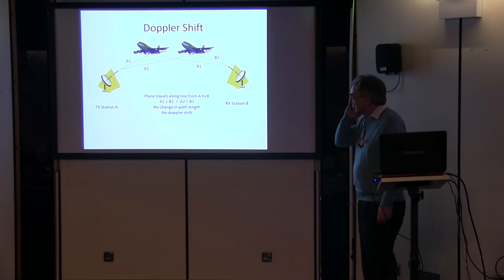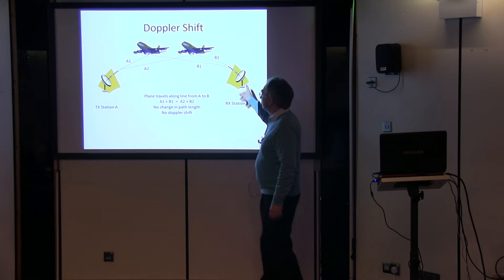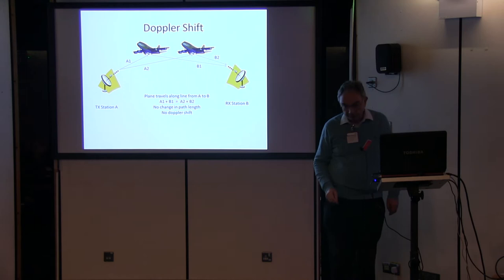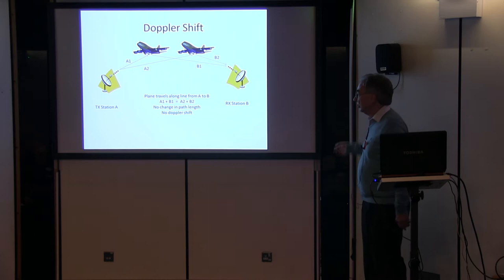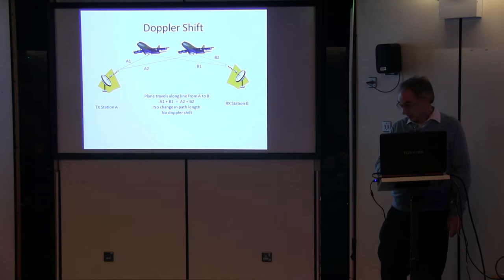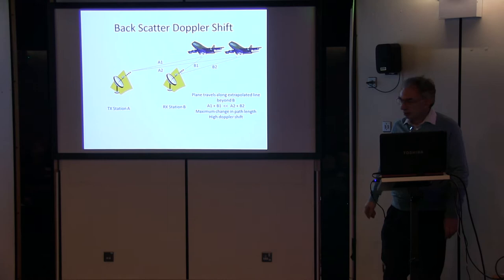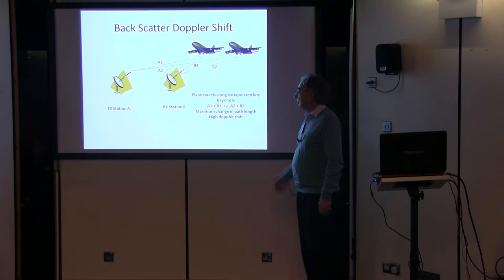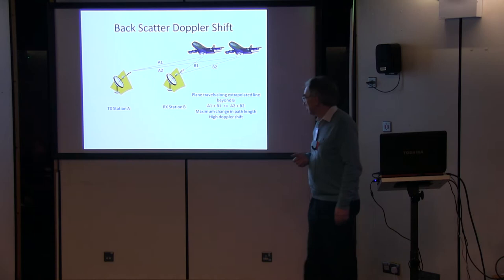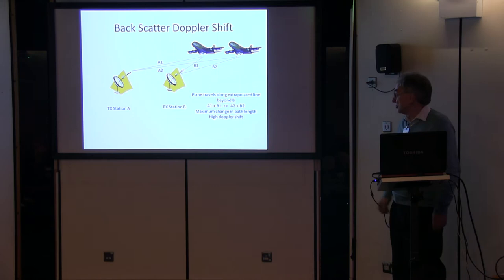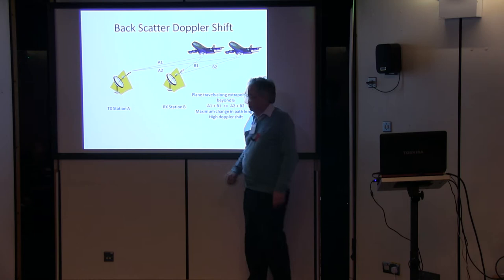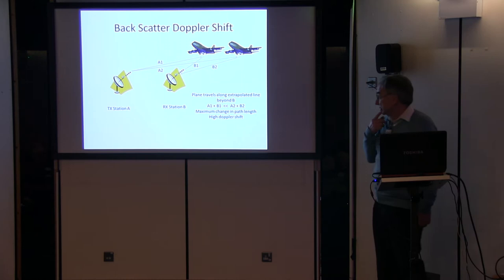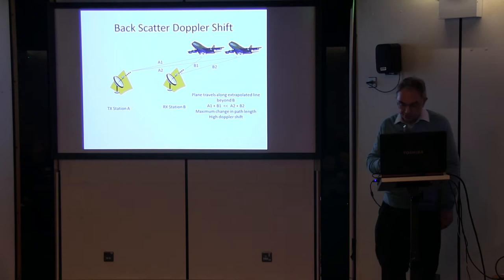People often think there must be a lot of Doppler shift, but actually there needn't be. If a plane's travelling directly along the line between transmitter and receiver, there is none, because as the path increases from one side, it decreases at the other by the same amount. No change in path length, no Doppler shift. So planes travelling directly over the path, or at a very slight angle, not much Doppler shift. This is why we don't use Doppler backscatter very much. You could in theory bounce signals off planes behind you, but it's tricky because the Doppler shift is quite large and path losses are generally higher.